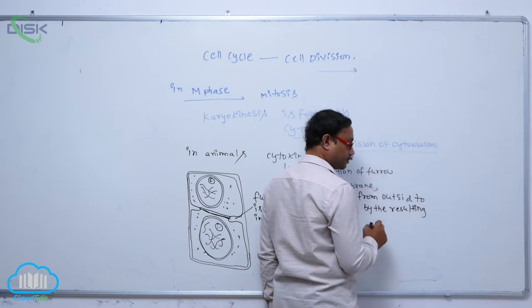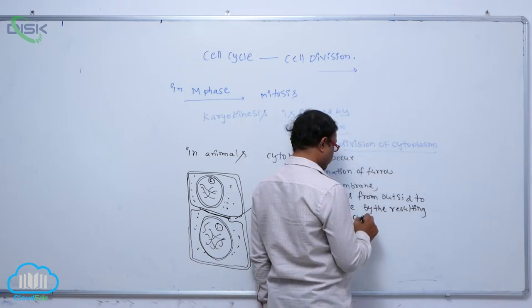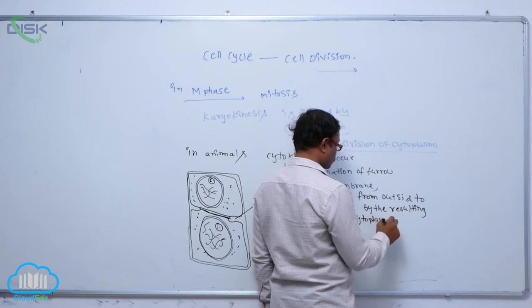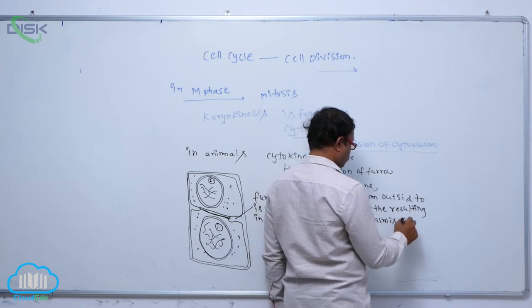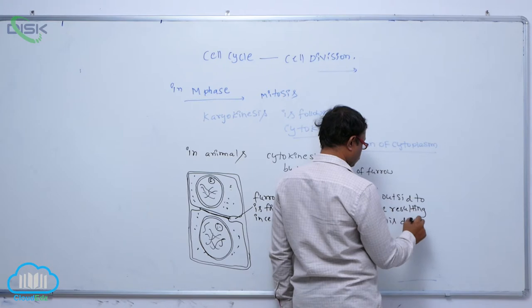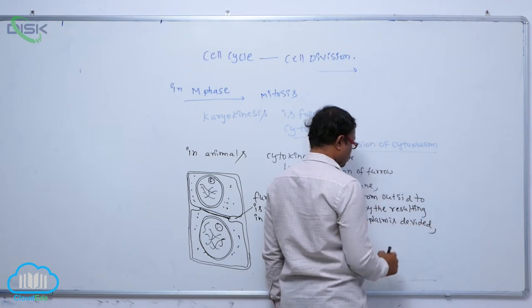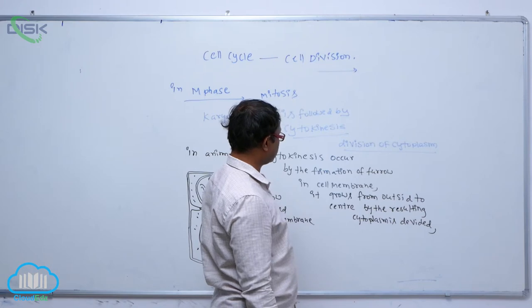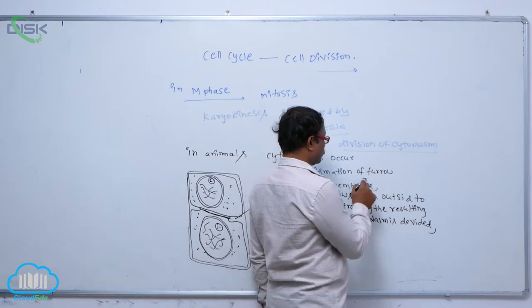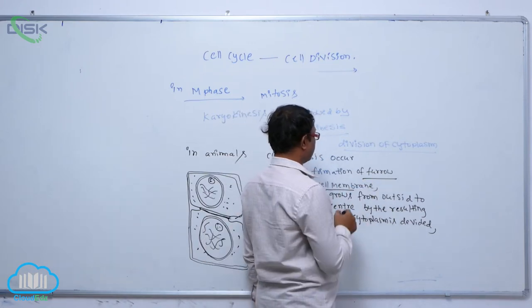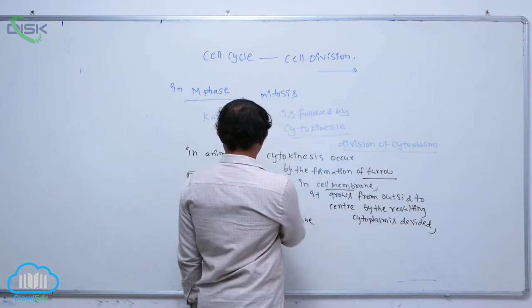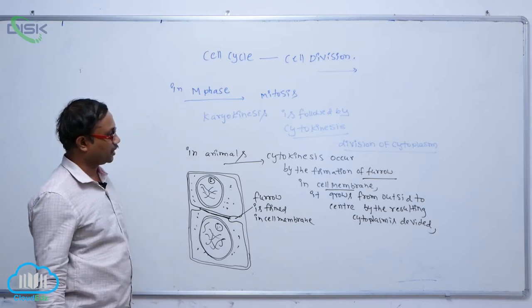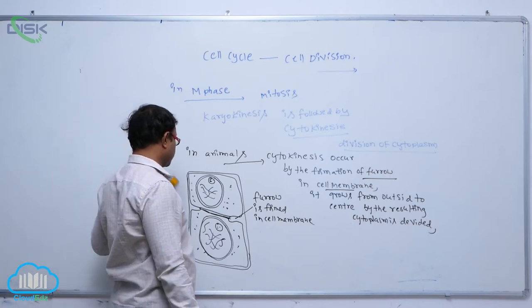By the resulting furrow, the cytoplasm is divided. This is known as cytokinesis occurring by the formation of a furrow in the cell membrane in animals. Generally, this process occurs in animals; in plants, a different process occurs.